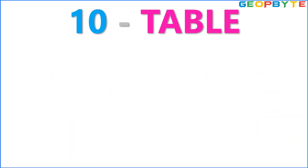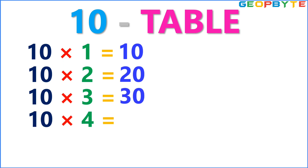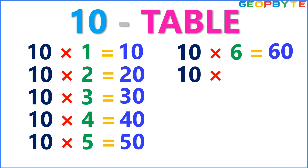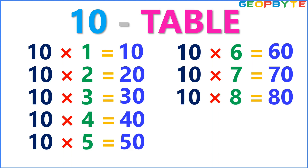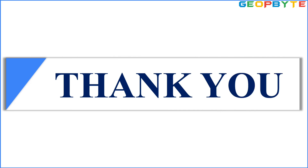Now let us see the 10 table. Ten ones are ten. Ten twos are twenty. Ten threes are thirty. Ten fours are forty. Ten fives are fifty. Ten sixes are sixty. Ten sevens are seventy. Ten eights are eighty. Ten nines are ninety. Ten tens are one hundred. Thank you for watching. Please do like, share, comment and subscribe to GeoByte.